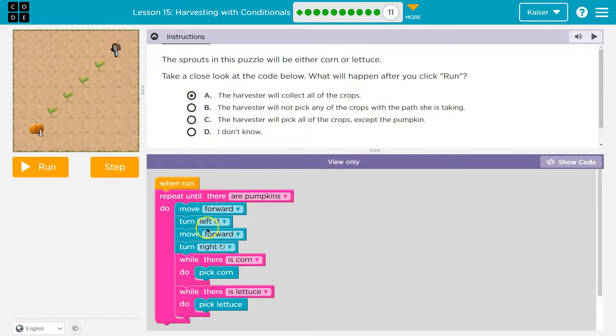So then what do I do? Forward, left, forward, right. And I'm going to go down this like stairs, I think. Each time I'll check if there's corn, and if there is, I'll pick all of it, or if there's lettuce, and I'll pick all of it.